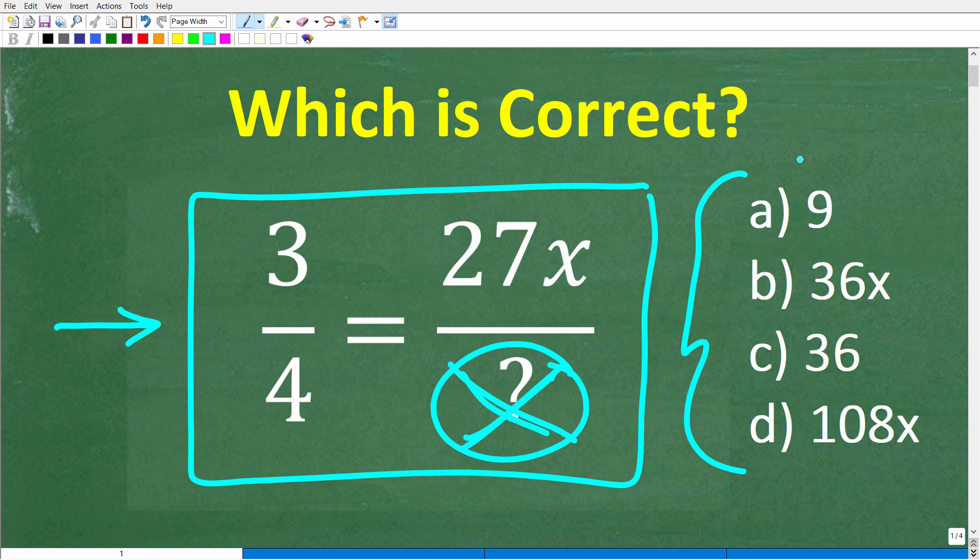But what we have here is a multiple-choice question, and let's take a look at our answers. These answers are the possible answers for the denominator in this second fraction. So A is 9, B is 36x, C is 36, and D is 108x.